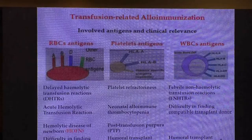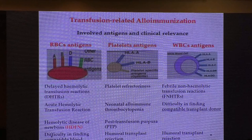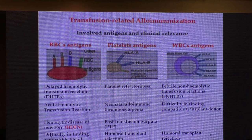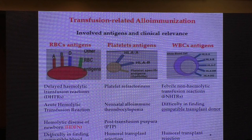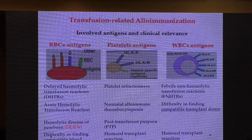Most of us are concerned about iron chelation and iron overload, but there are very important things in terms of transfusion. Transfusion is the main therapy for these patients. The important antigens involved are red blood cell antigens, platelet antigens, and white blood cell antigens. Alloimmunization occurs against these foreign antigens.